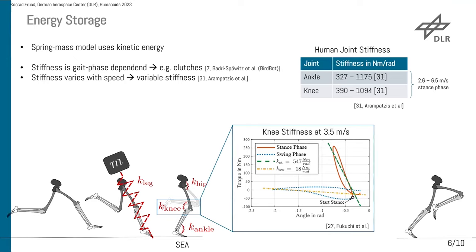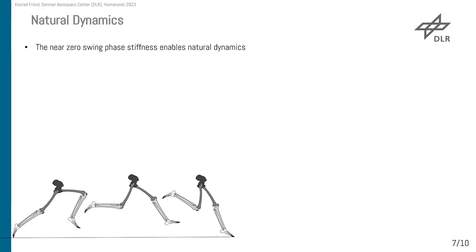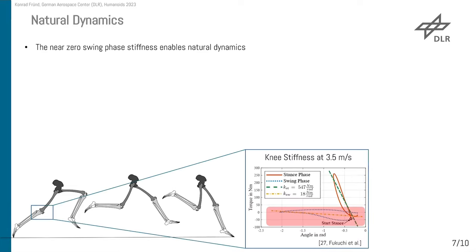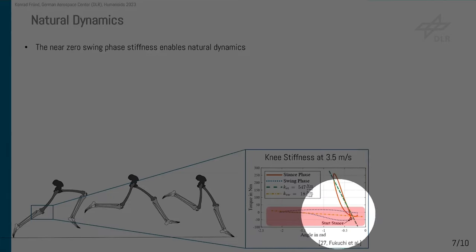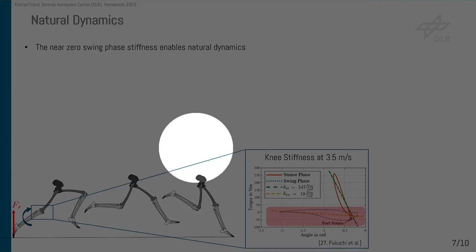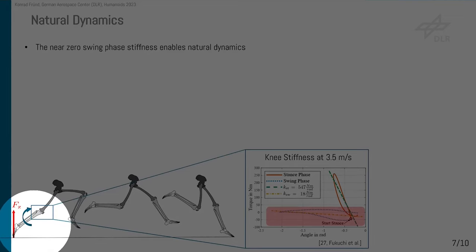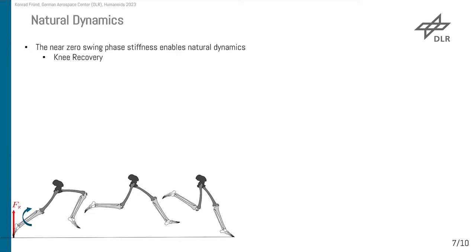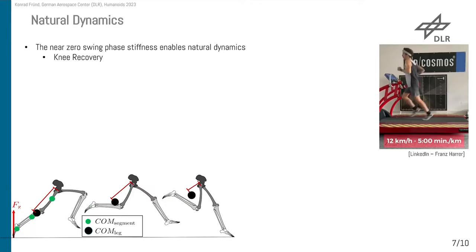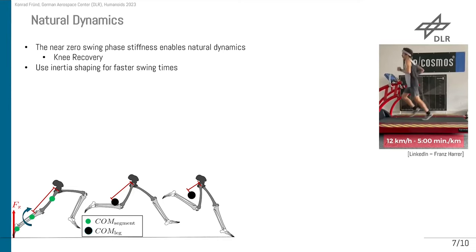Now let's go to the next bioinspired fundamental, which is about natural dynamics. Here we use the near-zero swing phase stiffness, which enables natural dynamics. We are using the stiffness in this region, which is nearly zero, and it also converges to zero in the late stance phase. If we now have a ground reaction force in the late stance phase pushing us upwards, we can easily deflect our knee — this is called knee recovery. This is helpful because the center of mass of each segment sums up to the center of mass of the leg, and in the consecutive swing phase the distance to the hip joint will reduce, increasing angular velocity and shaping the inertia for faster swing times.